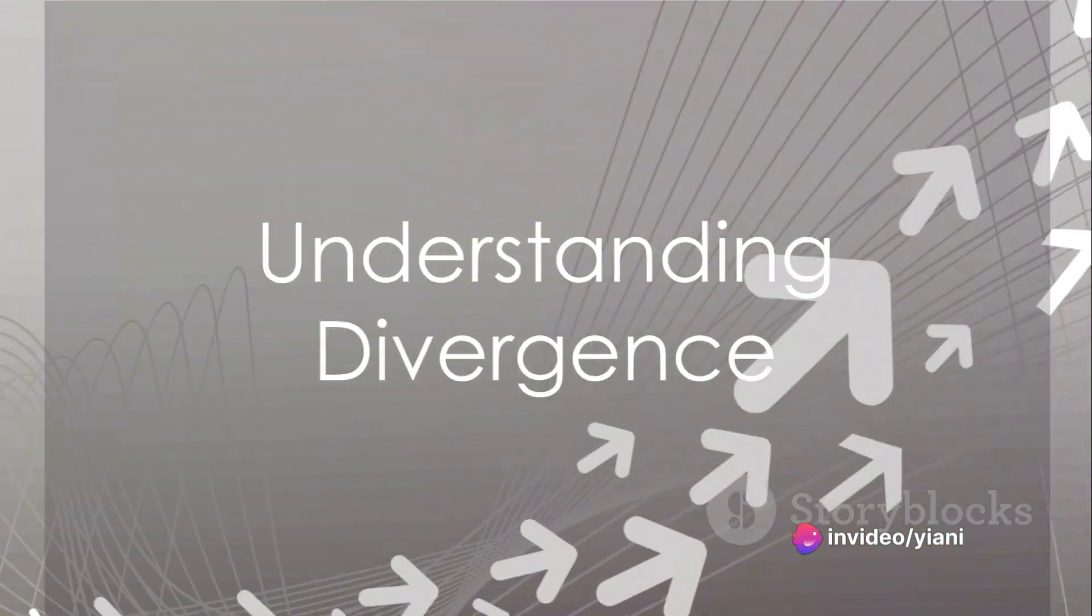Divergence helps us understand a vector field in multiple ways. For instance, when the divergence of a vector field at a certain point is positive, it indicates that the vector field is expanding from that point.